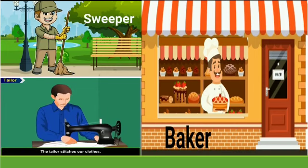Now see the next picture — you can see pastries, cakes, and all. Who is he? Correct! He is the Baker. The baker prepares yummy pastries and cakes. Whenever it's our birthday, we bring cakes home and celebrate. So the Baker also helps us — all of these are our helpers.